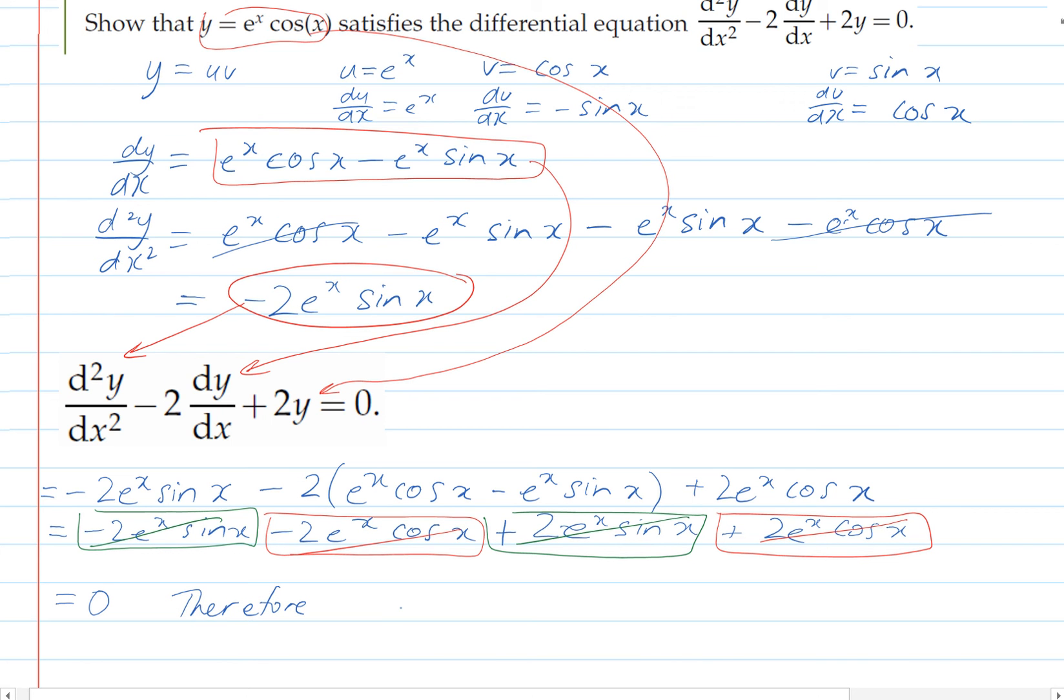And so all of that equals 0, which shows that that is a solution. So we can say, therefore, y equals e to the x cos x is a solution.